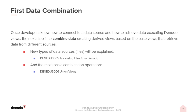This part of the training course will be focused on basic data combinations between data coming from different data sources. Before combining the datasets, you will have to connect a new type of data source, local or remote. Different types of files will be explained: text plain files where the data is structured — for example, a CSV or comma-separated values file — and Microsoft Excel files, which are binary files where each row of the spreadsheet will be mapped to a single observation of a view in Denodo. Once the new data sources are configured, we can combine data, and for the first combination, we'll explain the union operation.